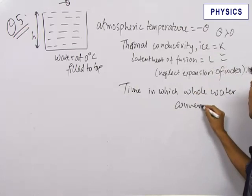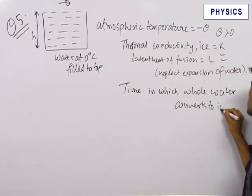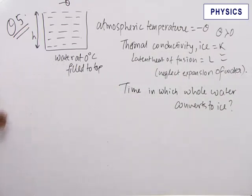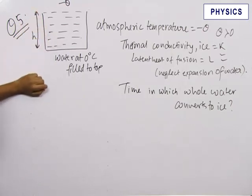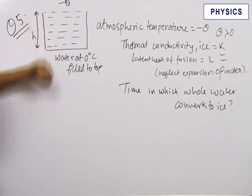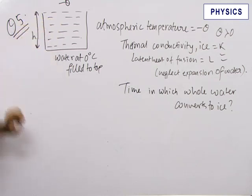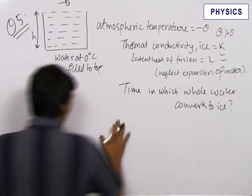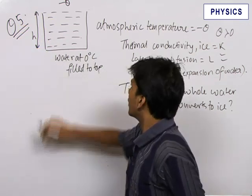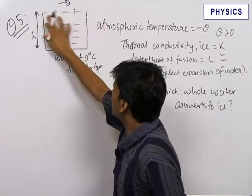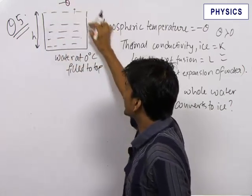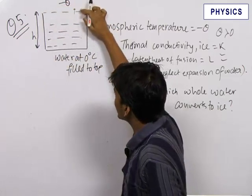Since the water is at 0°C and the atmosphere is at minus theta, there will be a heat current flowing from the water to the atmosphere, causing a loss of heat from the system. Due to this, some amount of water will get converted into ice. The first contact comes at the top surface, so this layer of water gets converted into ice first, and slowly the layer of ice starts growing downwards.